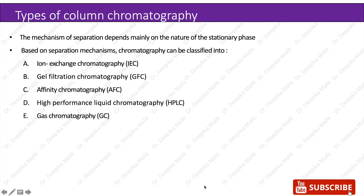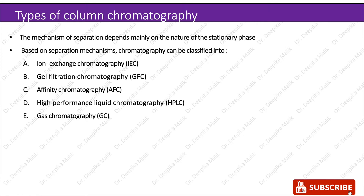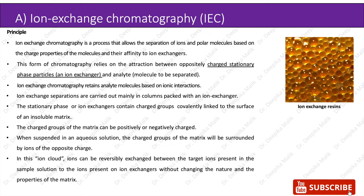Depending upon the mechanism of separation, based on the nature of the stationary phase, column chromatography can be classified into ion exchange chromatography, gel filtration chromatography, affinity chromatography, high performance liquid chromatography, and gas chromatography. We will be discussing all these types one by one.